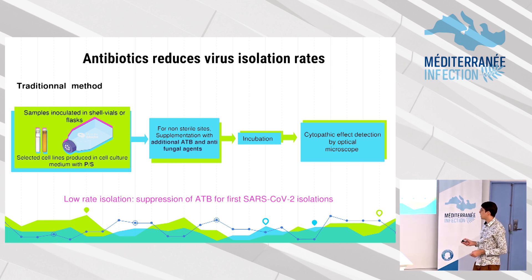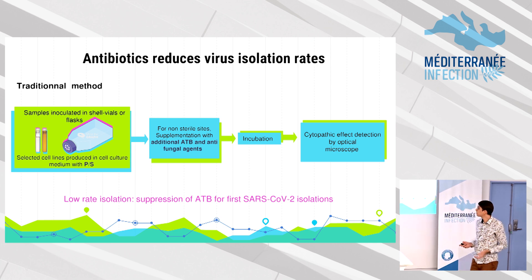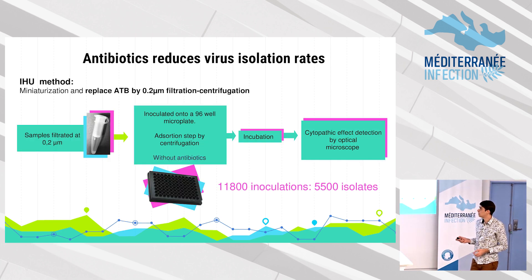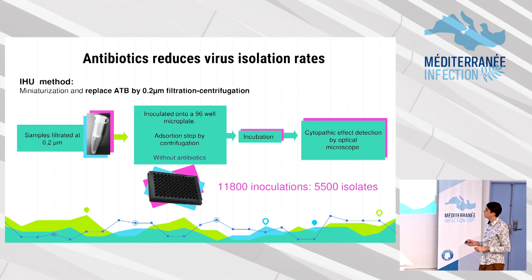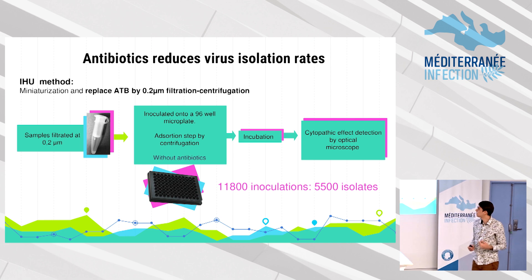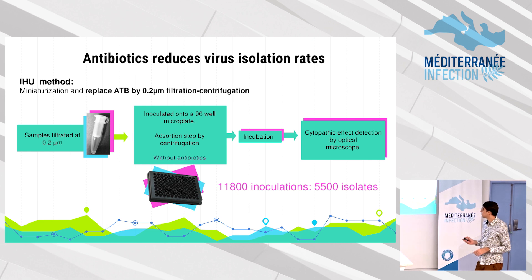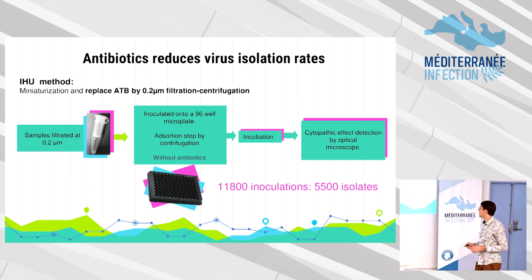For SARS-CoV-2, we observed suppression of isolation rates when antibiotics were present in culture. This is clear when we apply the ESU method, where we replaced antibiotics with a 0.2 micrometer filter by centrifugation, miniaturized the sample to a 96-well plate, performed adsorption by centrifugation, and used no antibiotics at any step. Here is a result from around 12,000 inoculations yielding 50,500 isolates.